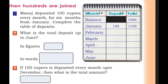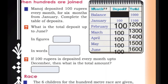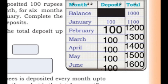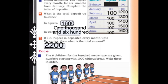Continuing the table: February total is 200, March is 300, April is 400, May is 500, June is 600. Wait — the transcript states February 1,200, March 1,300, April 1,400, May 1,500, June 1,600. The total deposit up to June is 1,600.